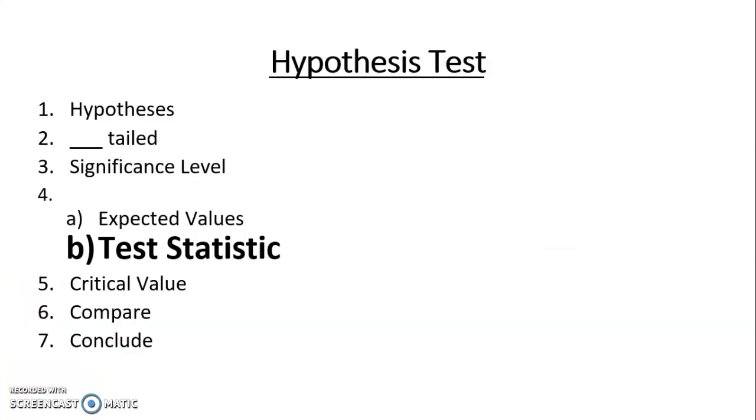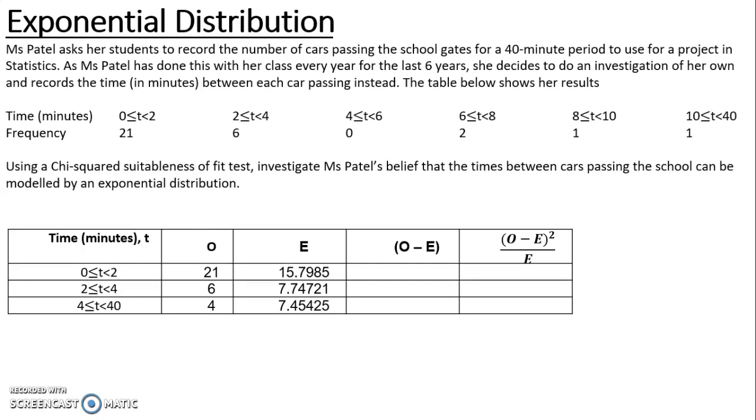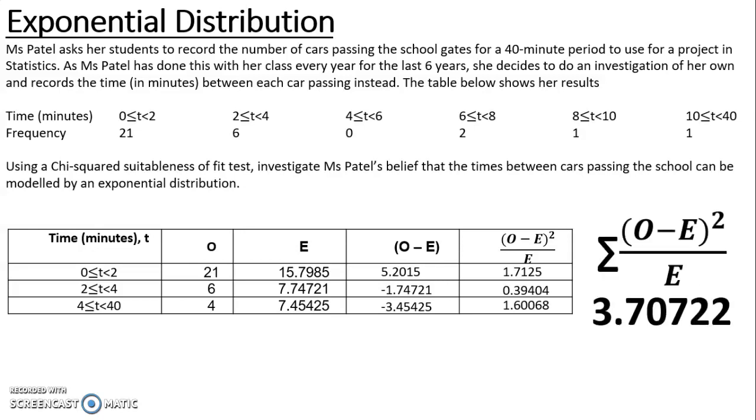Now I have my expected values, I can calculate the test statistic. I've just neatened the table up, I've got rid of all the categories that I've joined together and I've just put the 4 to 40 group at the bottom. The formula for the test statistic is the sum of O minus e all squared over e. So I'm just going to work out my differences, my O minus e's, and then I'm going to square them and divide by e to give me my contributions to the test statistic. If I add those three values together, I get my test statistic which is 3.70722.